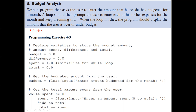We initialize our budget variable to zero, the difference to zero, and we have a variable named spent that we initialize to one — this is to initialize for the while loop. We also initialize the total to zero. The first thing we need to do is get our input, so we get the budgeted amount from the user. The input is a string, so we convert it to float and assign it to the budget variable. Now, using the while loop, we use spent as our sentinel value.